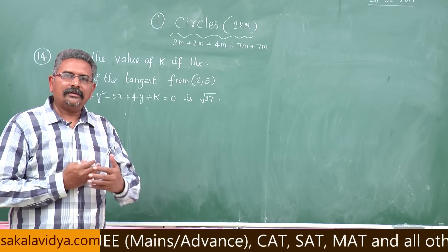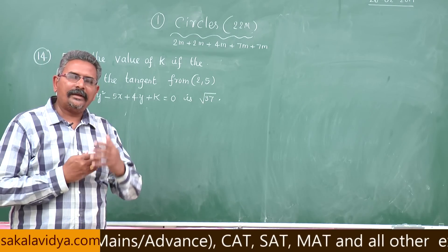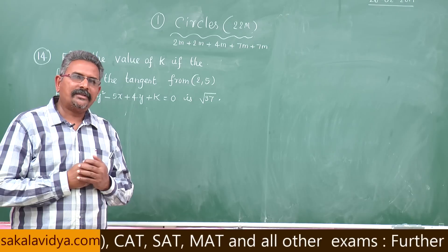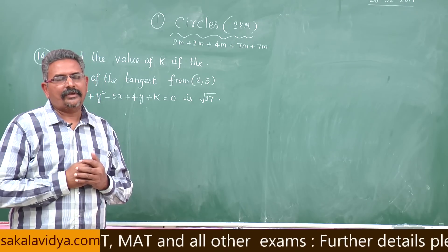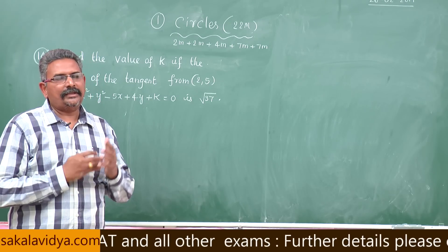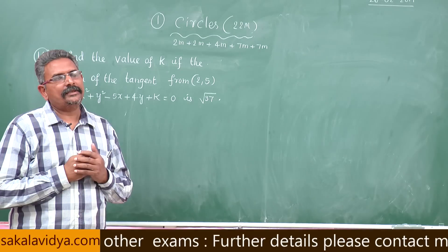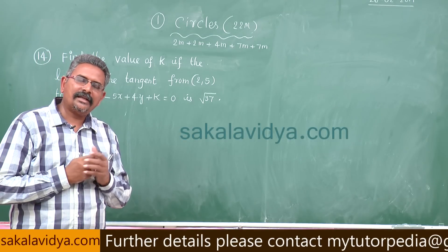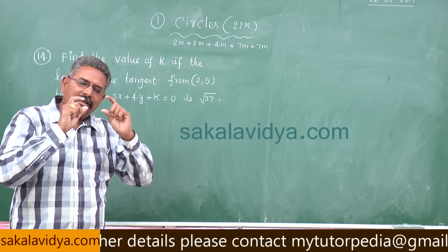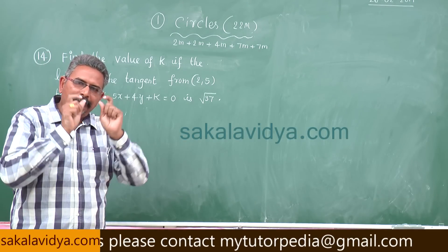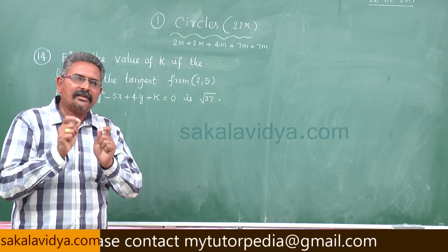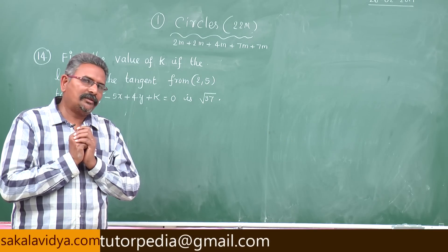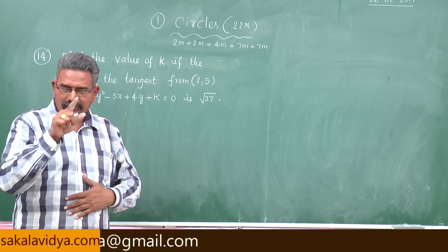Let us recall how to find the length of the tangent from a point drawn to a circle. The length of the tangent is given by √S₁₁, where S=0. S₁₁ is known as the abridged notation. The formula is: length of tangent = √S₁₁.